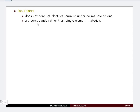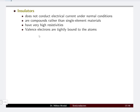Insulators are made up of compounds rather than single elements. Generally we use compounds for insulators. They will have very high resistivity, so resistivity will be very high and current will be zero under normal conditions. In an insulator the valence electrons are tightly bound to the atom, so we do not have any free electron for conductivity.